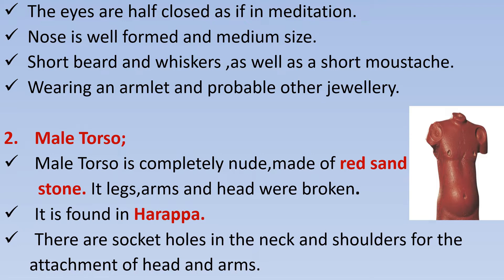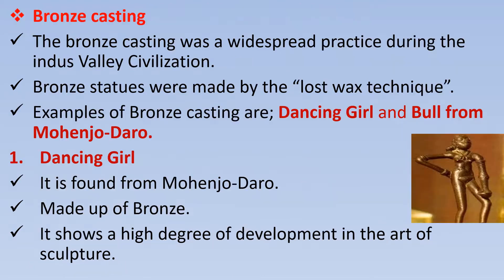The second figure is the male torso. The male torso is completely nude, made of red sandstone. Its arms and head are broken. It is found in Harappa. There are socket holes in the neck and shoulder for the attachment of the head and arms.